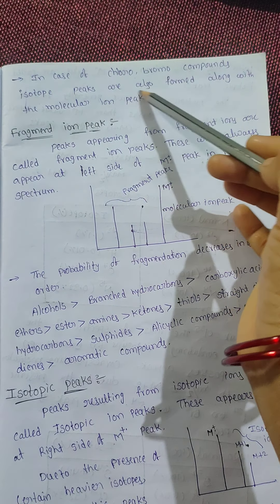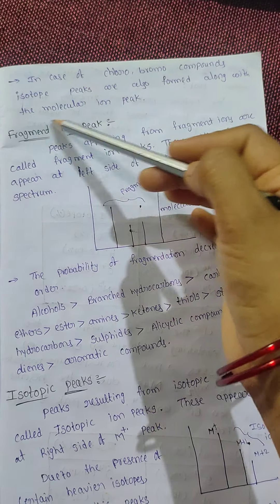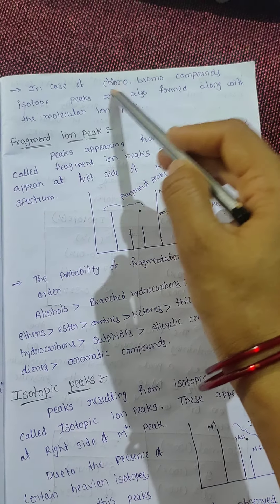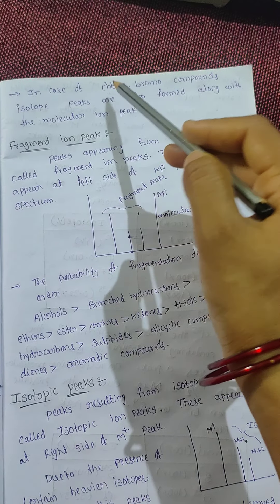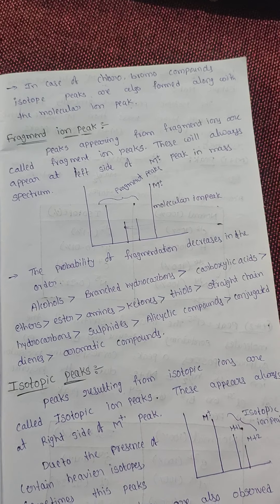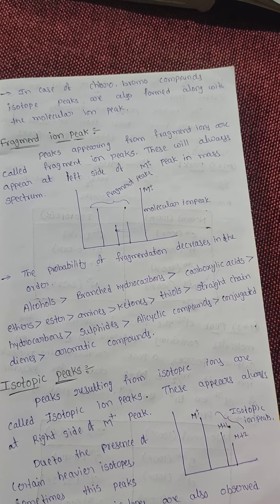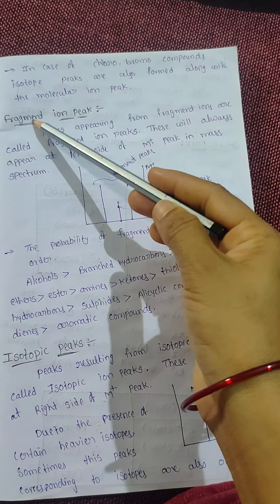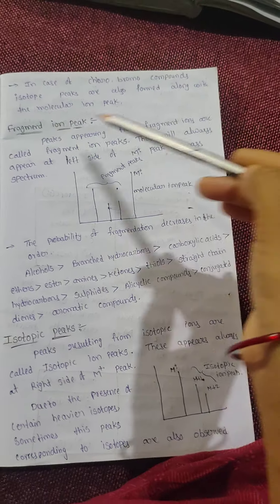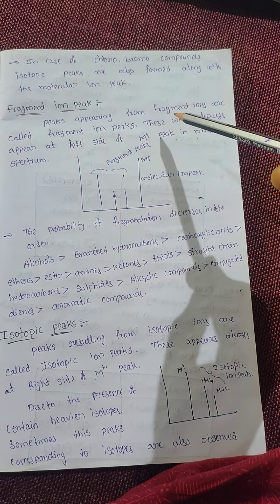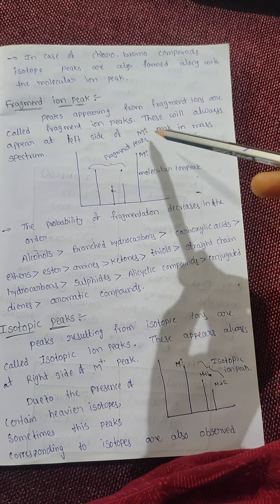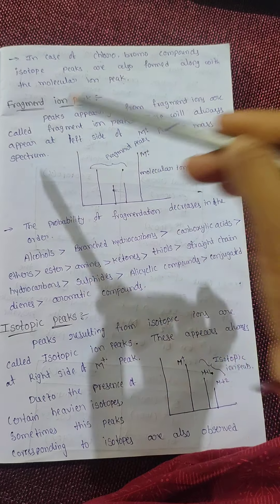In the case of chloro and bromo compounds, isotope peaks are also formed along with the molecular ion peak, because chlorine and bromine have isotopes. That is why we get isotopic peaks along with the molecular ion peak. This concludes the discussion of molecular ion peaks.